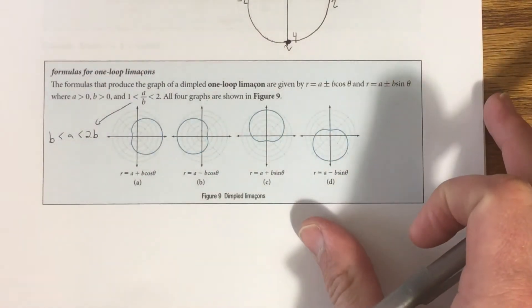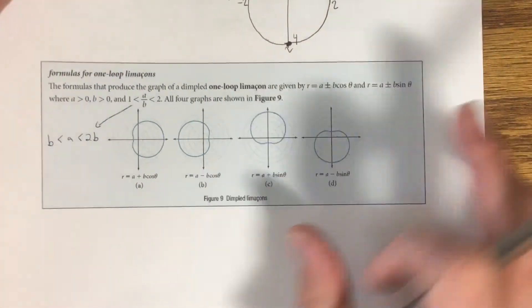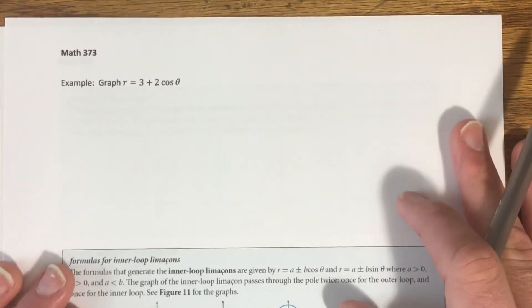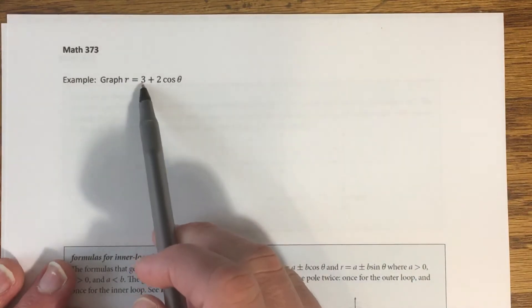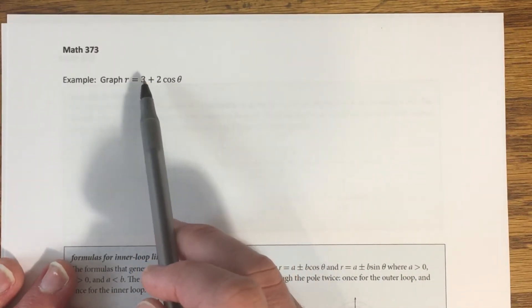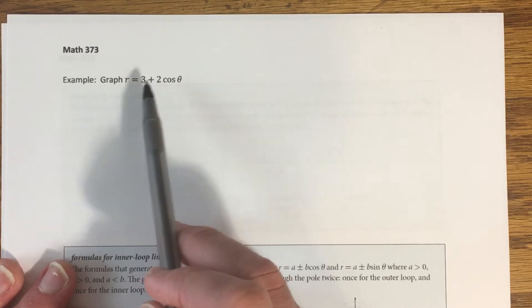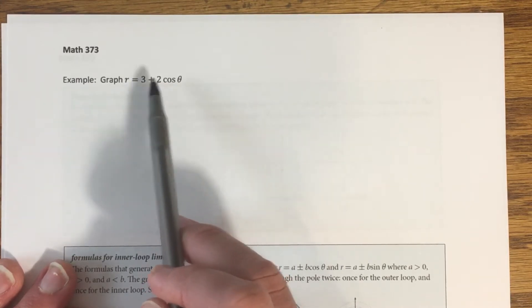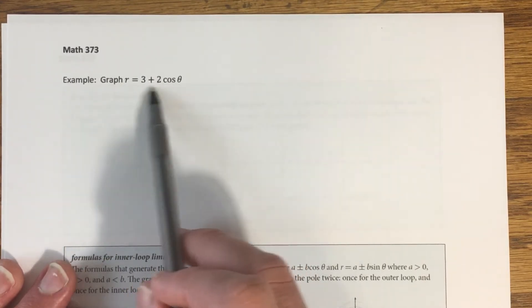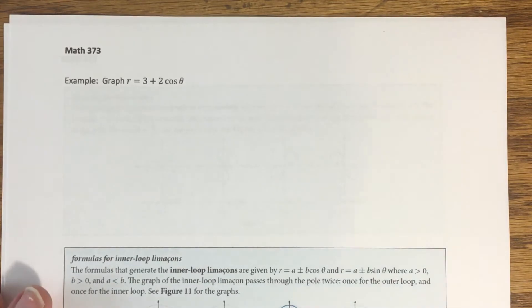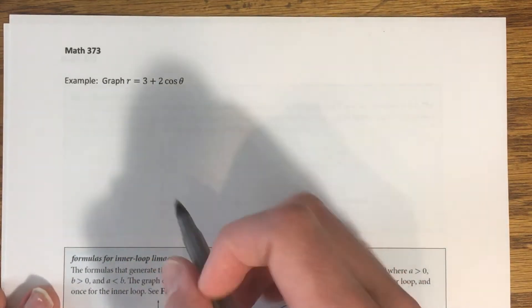Let's jump into an example: graphing r = 3 + 2cos(θ). Here a = 3 and b = 2. Notice that a is larger than b, but smaller than 2b — two times b would be 4, and 3 is less than that. So this falls under the category of a dimpled or one-loop limaçon.